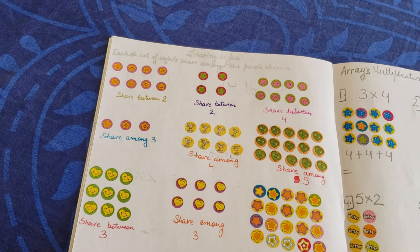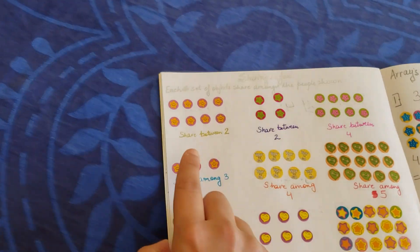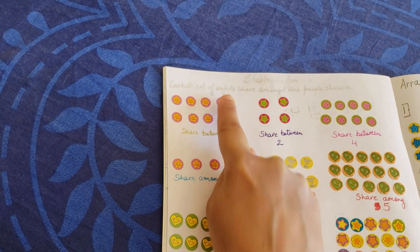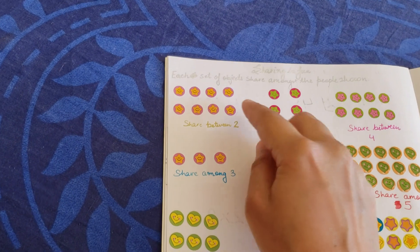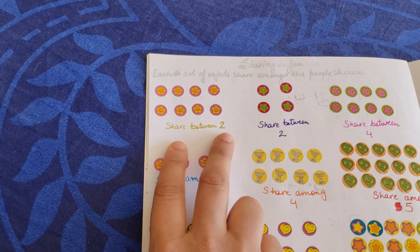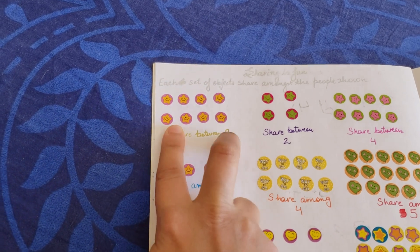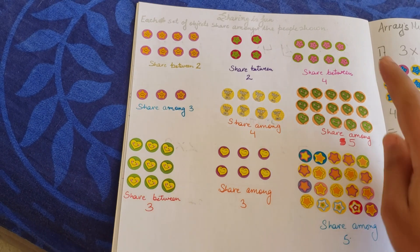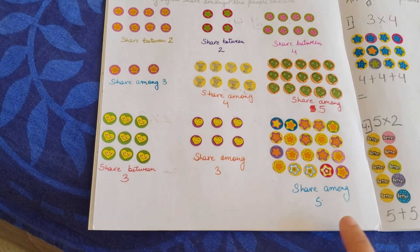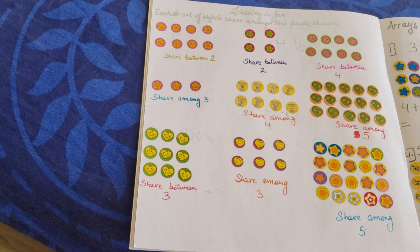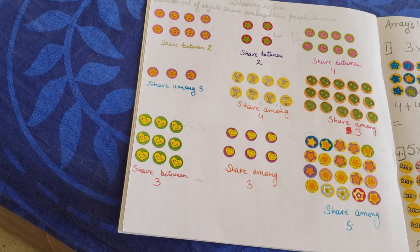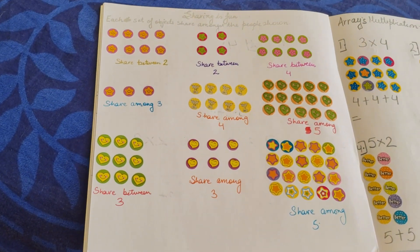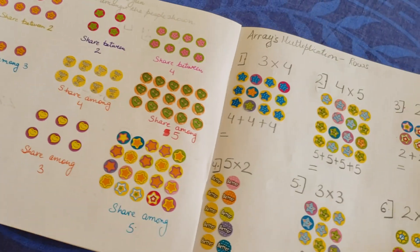Sharing is fun. Each set of objects share amongst the people shown. Share between two. What he needs to do is with the help of a pencil or marker or anything, he needs to divide this group into two parts or basically he needs to share. So if you have four and equal parts, you give four to one and another four to the other one. So in the same way, it's like sharing between four, amongst five, among three, among four. I think a very simple but nice way of just practicing multiplication, not by actually asking what is two into three or five into four or five into six.